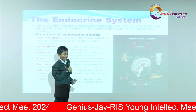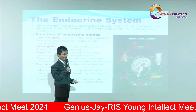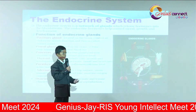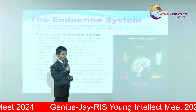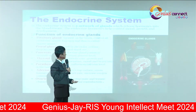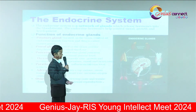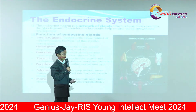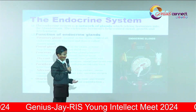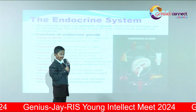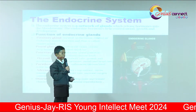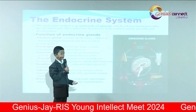The endocrine system is a network of glands which release hormones into the bloodstream. The endocrine hormones help to control mood, growth, and development. The pituitary gland is located in the brain and controls all endocrine glands. It is also known as the master gland.